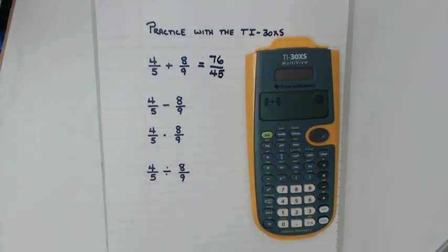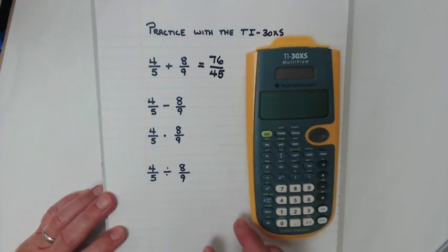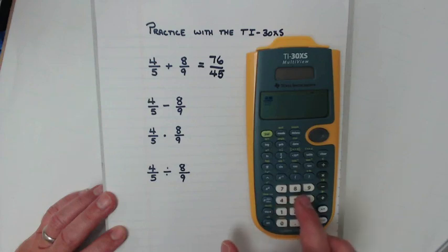So let's try one where we're subtracting. Make sure I clear out the calculator. Fraction button right here. Four-fifths. Move it over.